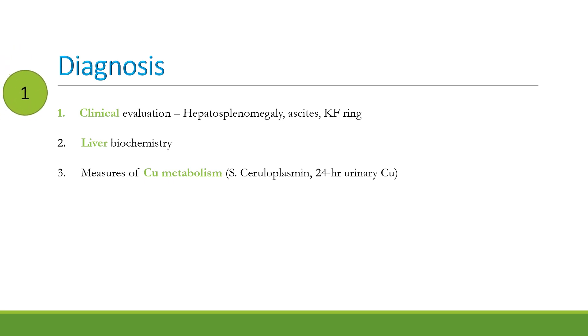S. Pagan proposes a 3-step approach to diagnosing Wilson's disease. The first step includes three parameters: clinical evaluation, liver biochemistry, and measures of copper metabolism. Clinical evaluation should include assessment for hepatosplenomegaly, ascites, and Kayser-Fleischer rings. One must suspect Wilson's disease even with unusual hepatic, neurological, behavioral, or psychiatric manifestations. Measures of copper metabolism include serum ceruloplasmin and 24-hour urinary copper.